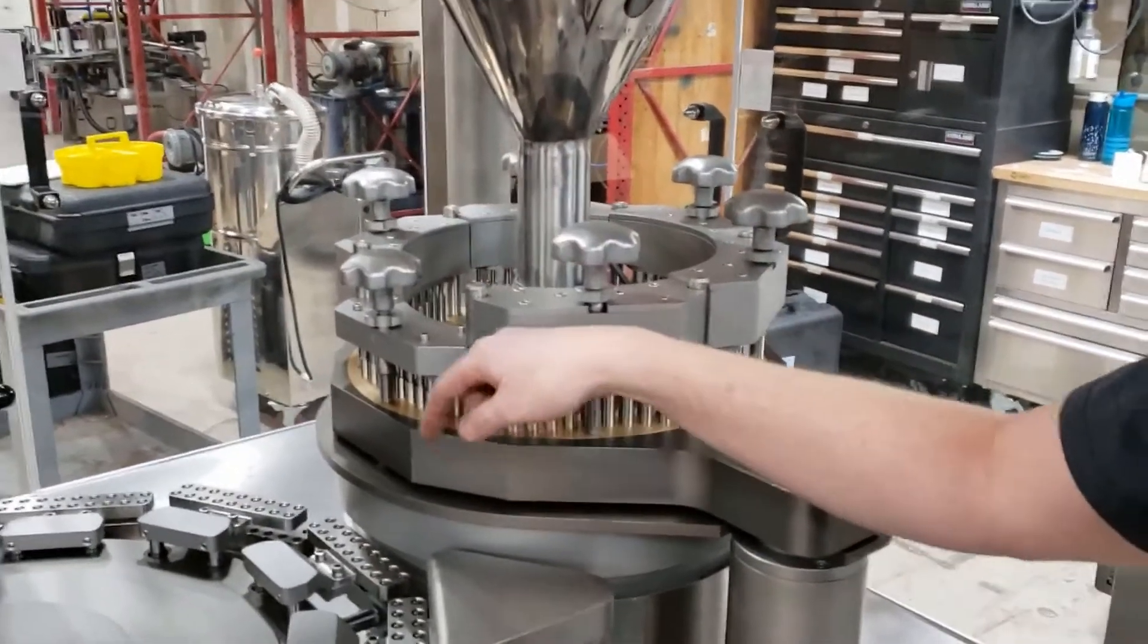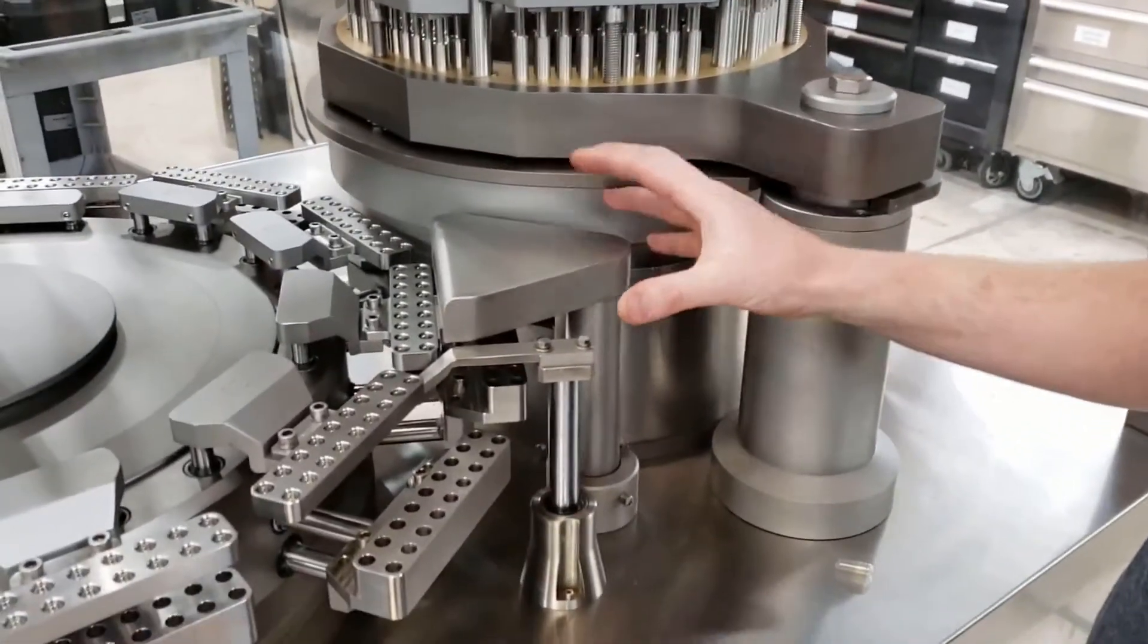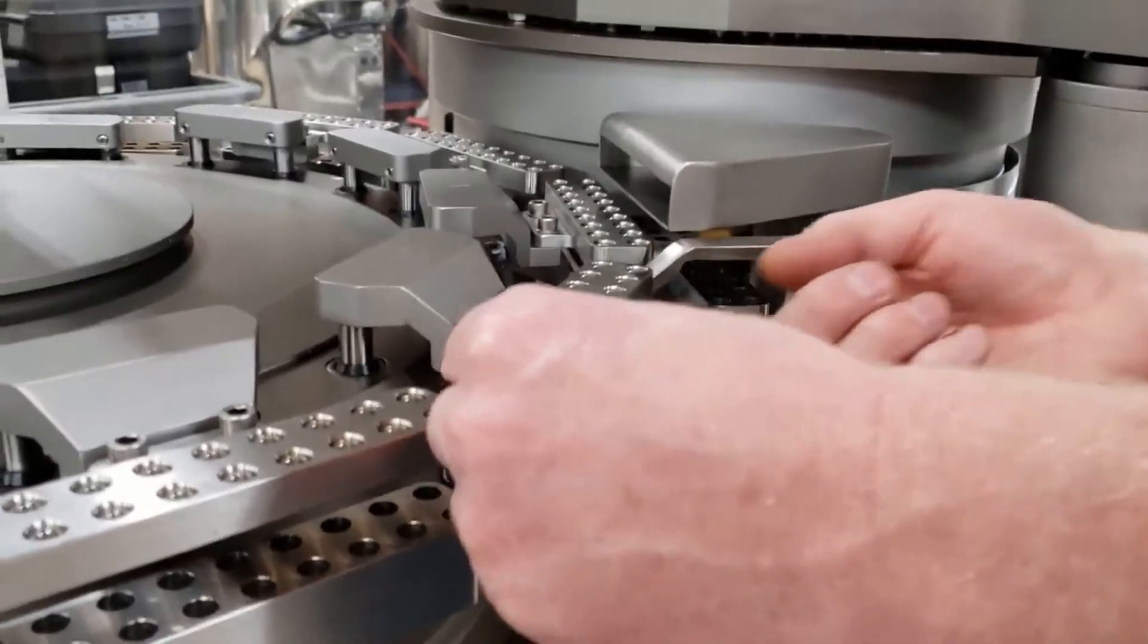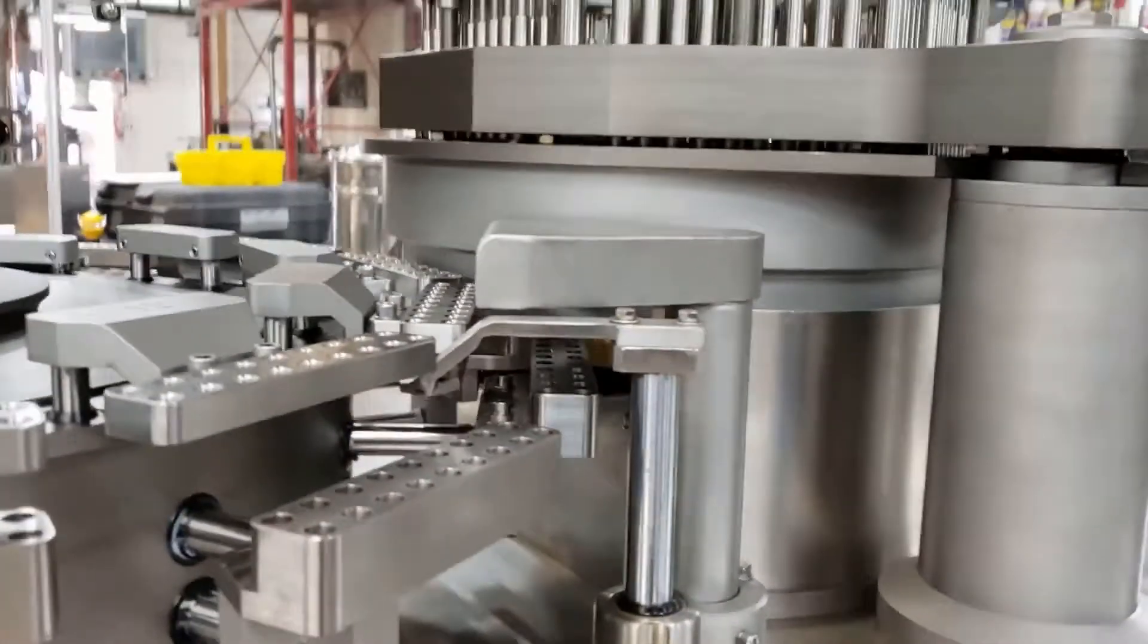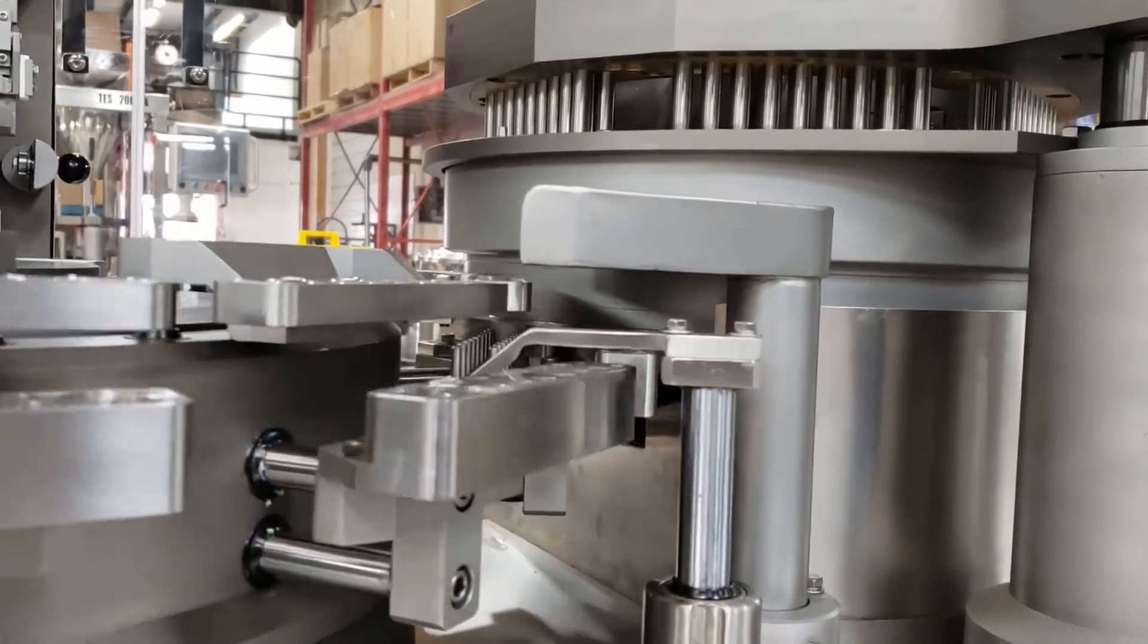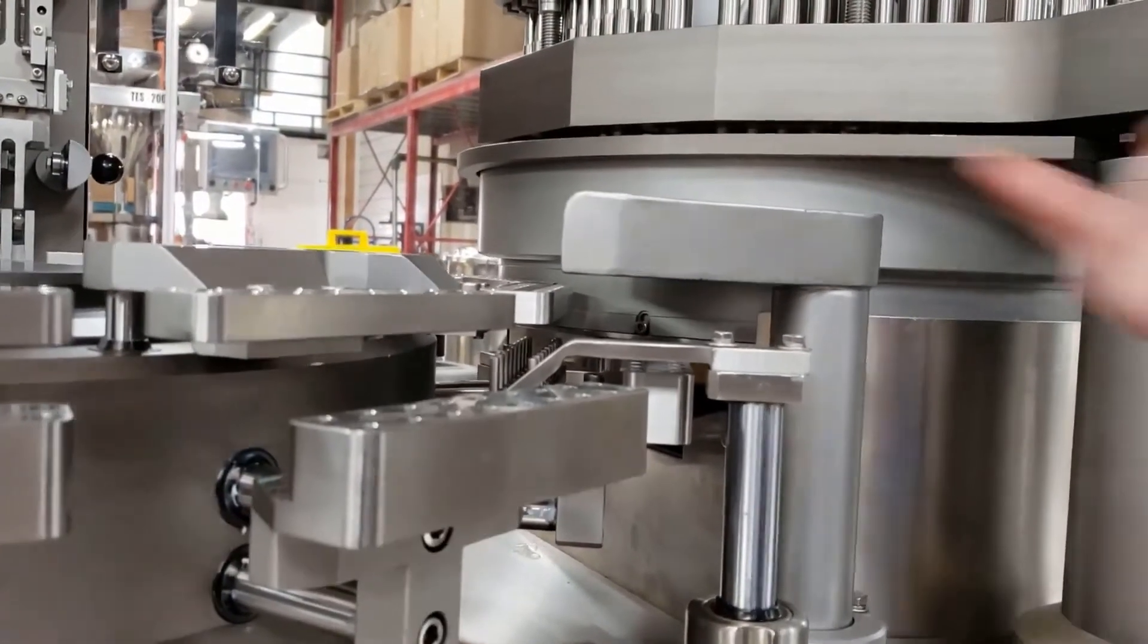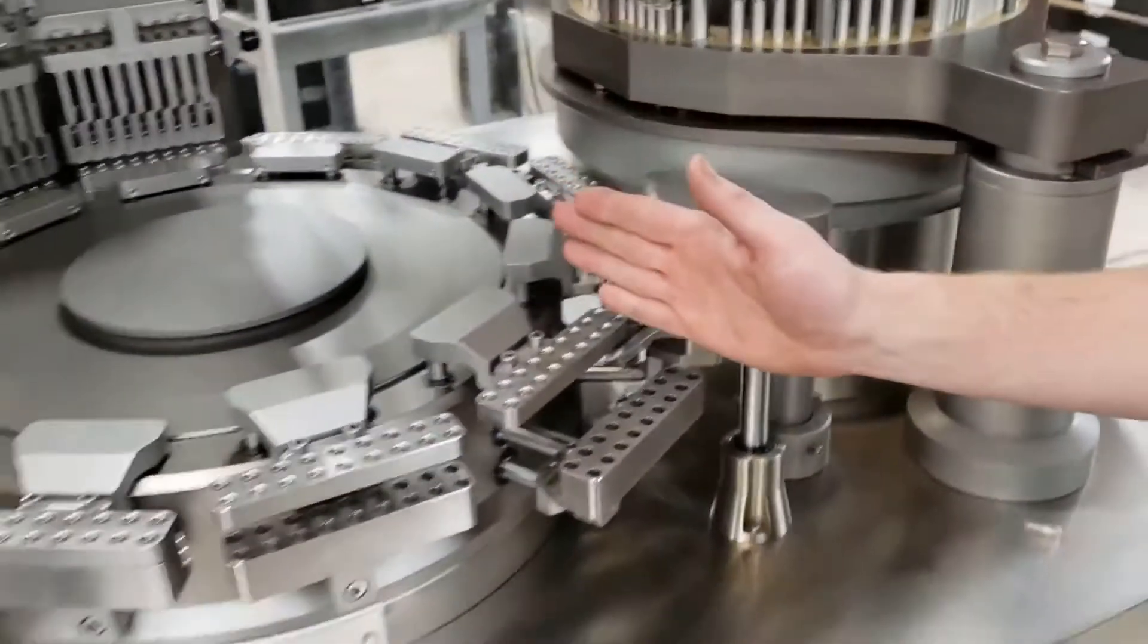But as our capsules get filled, transferred into our segment, now we're going to go on to our next station, which is our faulty capsule station. So this is checking to see if a capsule is still hanging down, it didn't separate. These pins, as we watch as I jog it around, they're going to come down and see if there's a capsule attached. There's no capsule attached, it's not going to push it out. If the capsule was attached, these pins would come up and push it out, and then it would get sucked away.